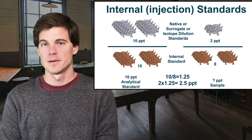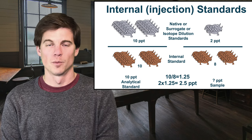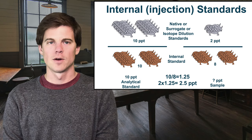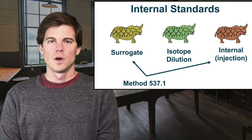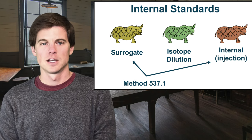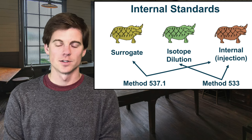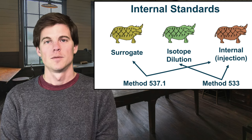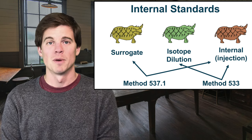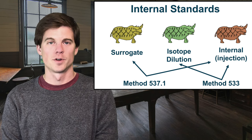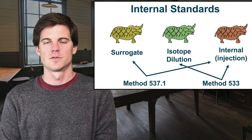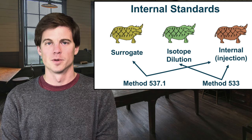Obviously 2 is not the same as 2.5 — the limit for reporting might be 2.2, so we've now reported something we couldn't have without the correction. Surrogates and internal standards are used in method 537 for drinking water, whereas isotope dilution standards and internal standards are used in method 533. Isotope dilution is always better — the data is automatically corrected, so it's going to be better data. Method 533 is superior in a lot of ways; it's a much newer method from 2019, whereas 537 has been around for years longer.